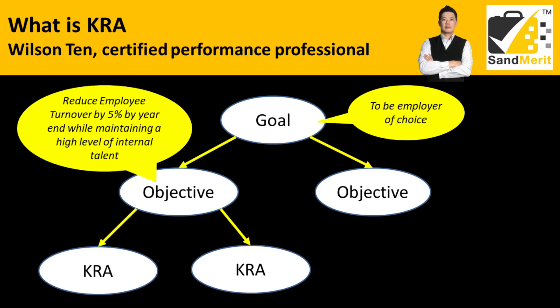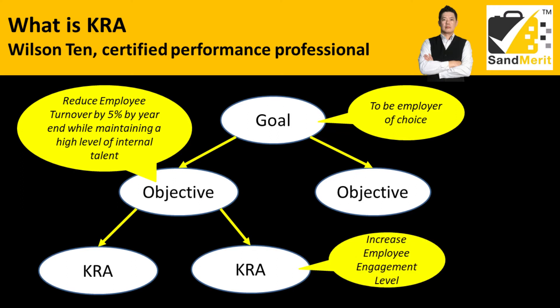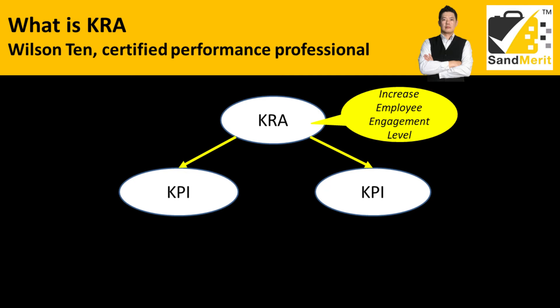KRA — key result area, also known as key performance area — refers to general areas of outcome or output for which a role or a combination of roles is responsible. These are the areas within the organization where an individual or group is logically responsible or accountable for results. In this example, in order to reduce the employee turnover rate, you increase the employee engagement level — that is the KRA.